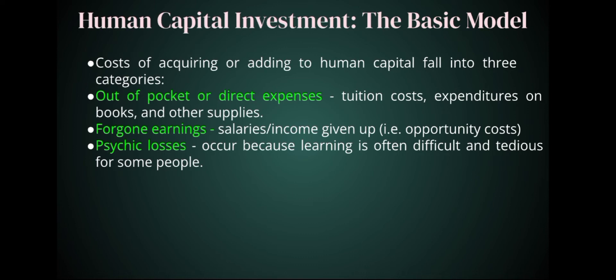In human capital investment, there are several costs. The cost of acquiring or adding to human capital falls into mainly three categories. The first is out-of-pocket or direct expenses — meaning tuition and expenditures on books and other supplies. Second, foregone earnings — salaries that people would have to forego. For example, a person who is already employable because they are above 18 but chose to study would give up income as an opportunity cost. Third, psychic losses, which occur because learning is often difficult and tedious for some people.